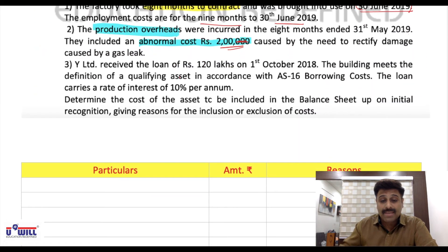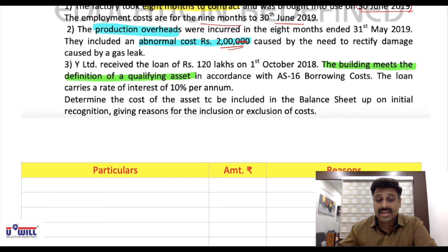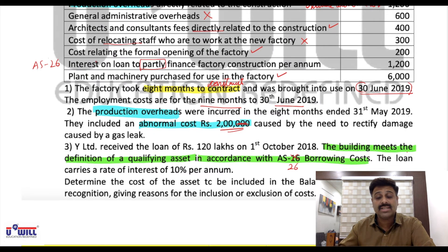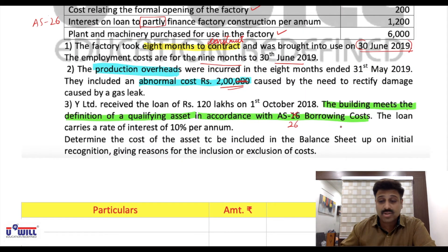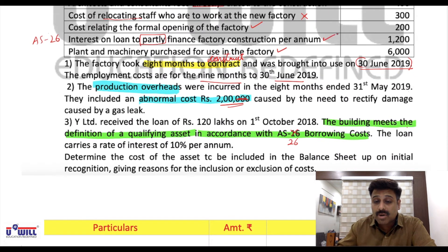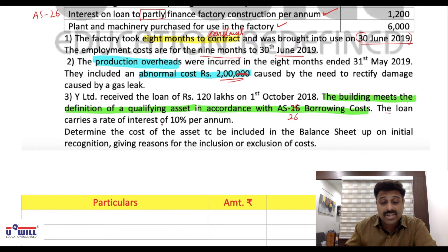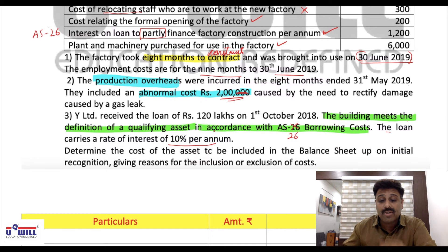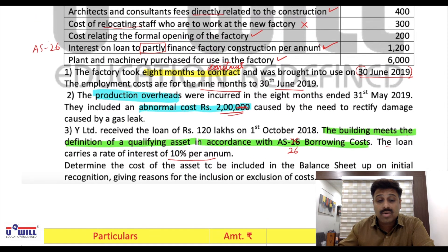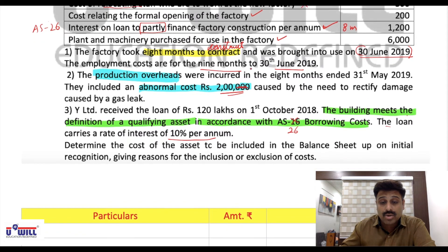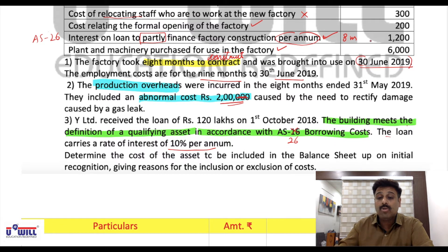BY Limited received a loan of 120 lakhs on 1st October 2018. The building meets the definition of a qualifying asset in accordance with AS 26 — borrowing cost is allowed, therefore it will be included. The loan carries an interest rate of 10% per annum. We include only 8 months' interest — not the full year — so: 1,200 × 8/12 = 800 rupees will be included.